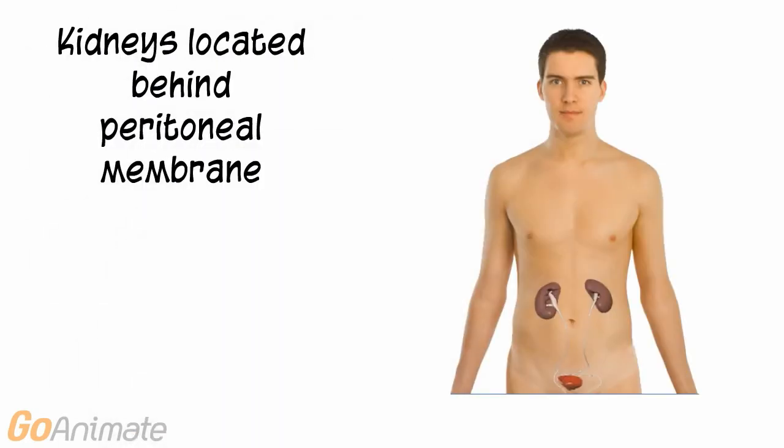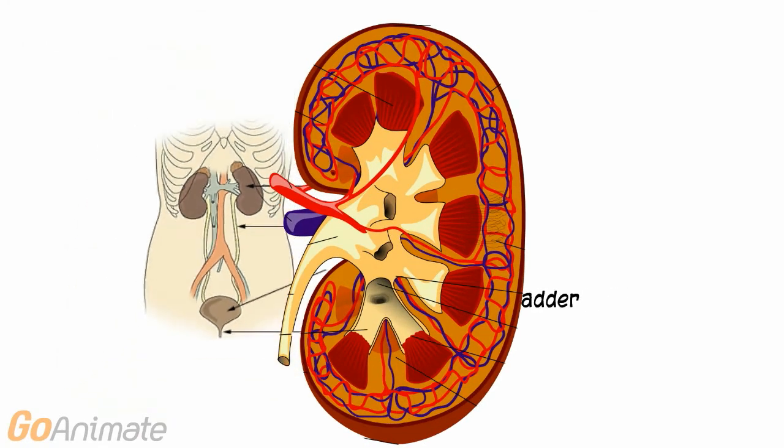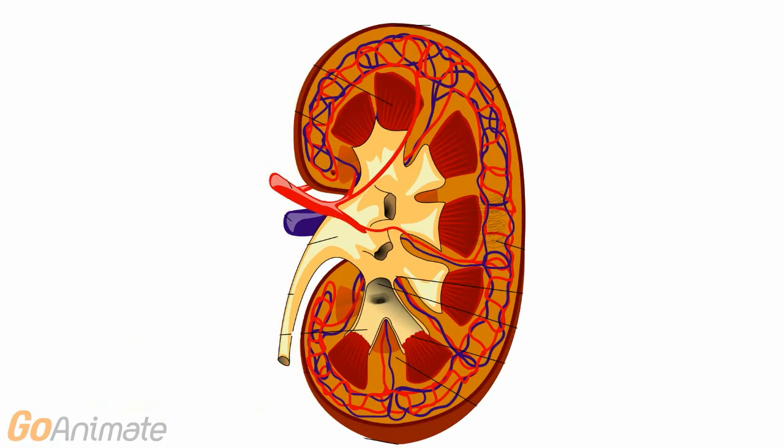The kidneys are located behind the peritoneal membrane of the abdomen and extend from about T12 to L3. Let's take a closer look at the kidneys.